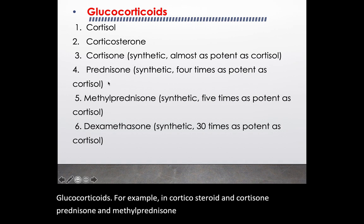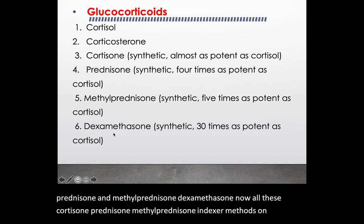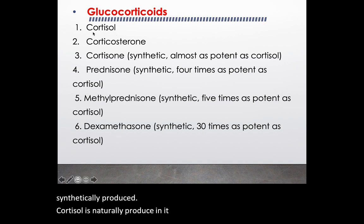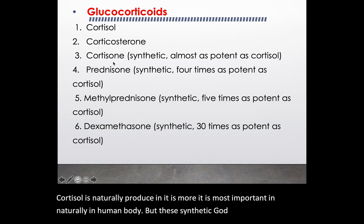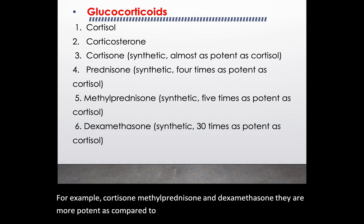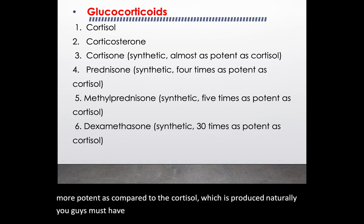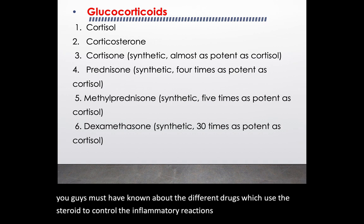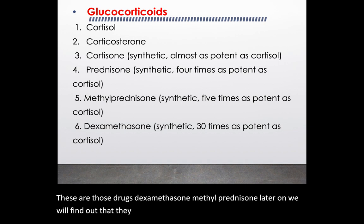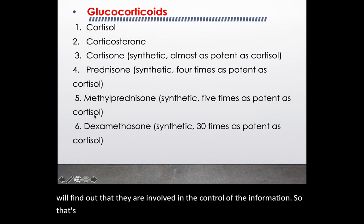Cortisone, prednisone, methylprednisolone, and dexamethasone are synthetically produced. Cortisol is naturally produced and is the most potent glucocorticoid in the human body, but these synthetic glucocorticoids are actually more potent than naturally produced cortisol. You may know about different drugs which use steroids to control inflammatory reactions — dexamethasone, methylprednisolone, and prednisone are those drugs, and later we will find that they are involved in controlling inflammation, which is why they are used in the pharmaceutical industry.